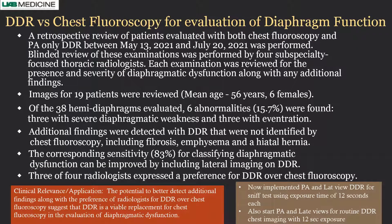We performed a brief comparison study of DDR versus chest fluoroscopy, looking at 19 patients — 38 hemidiaphragms. We found six abnormalities: three were severe diaphragmatic weakness and three were eventration; unfortunately there was no paralysis in that cohort. The majority of diaphragm dysfunction was identifiable with DDR. Additionally, because DDR has a large field of view, you can see the entire lung, any other lung findings, and hiatal hernia.